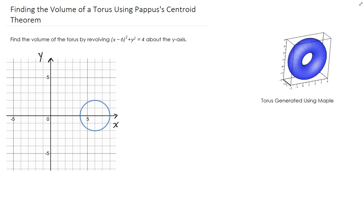But in this case, we want to use the theorem of Pappus, which is really a nice theorem because it's a lot easier to do. Recall that the volume of a torus is 2 pi times R times A.